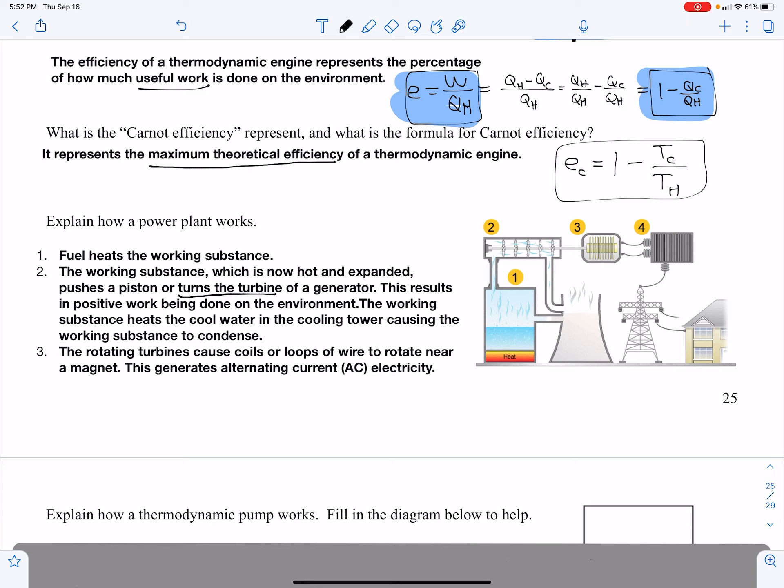Turning the turbine results in positive work on the environment. That working substance, the steam, is going to condense and find its way down into this cooling tower. But while it does that, the rotating turbine is causing loops of wire to rotate near a magnet. Changing magnetic fields through a loop generate alternating current or AC electricity, which is what gets sent to our homes and businesses and hospitals.